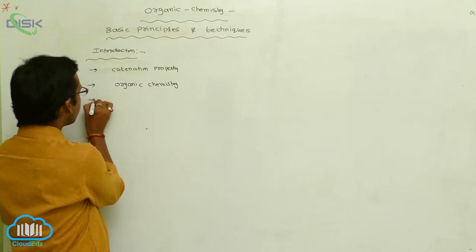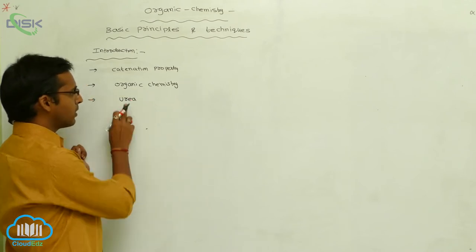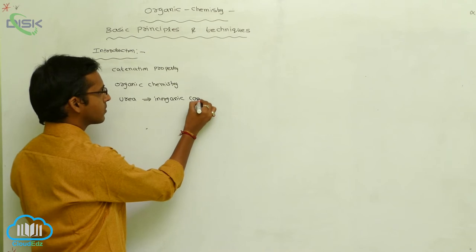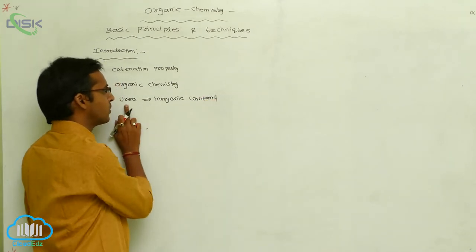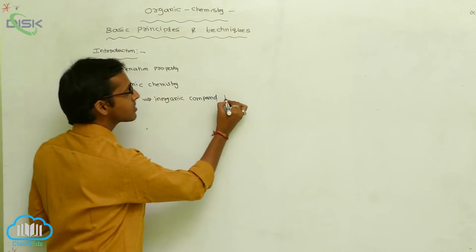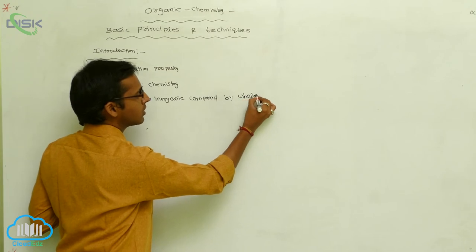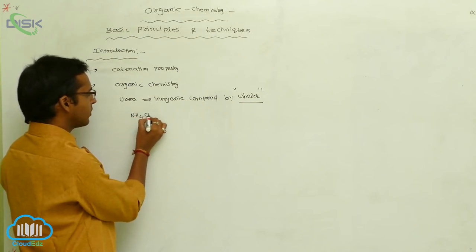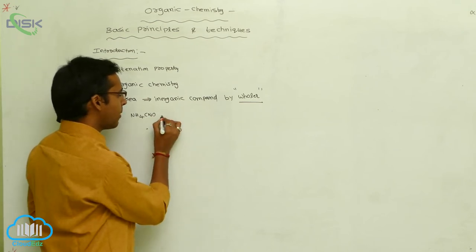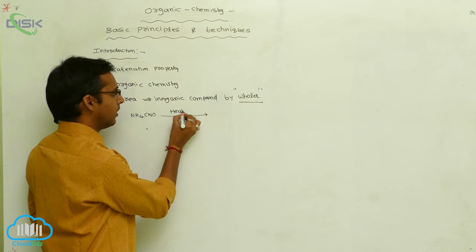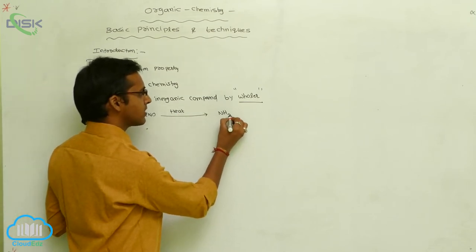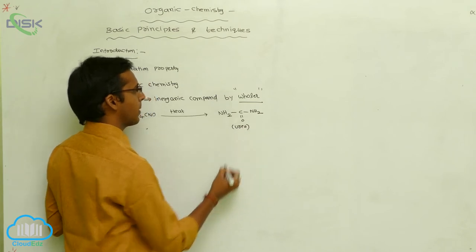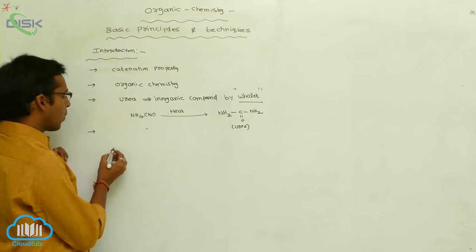In organic chemistry, we discuss carbon compounds and their properties. The father of organic chemistry is Wöhler — he was the first scientist to prepare urea from inorganic compounds. The first organic compound, urea, was prepared from the inorganic compound ammonium cyanate. When ammonium cyanate is heated, it produces urea, whose formula is NH2-C(=O)-NH2.